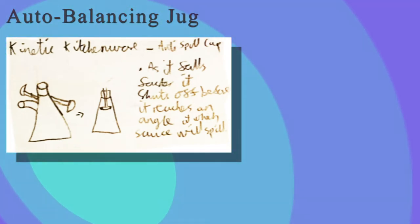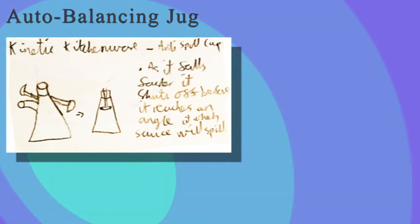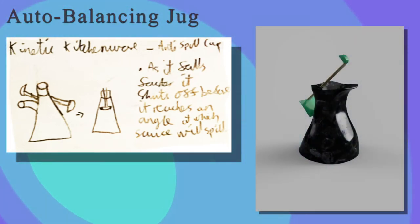My first idea was an auto-balancing jug, a simple kinetic kitchenware concept where, as it falls, some mechanism would close off the jug so nothing could spill — maybe as a soy sauce container. I didn't really like this idea as it wouldn't hold up against many products that already exist, but nonetheless I made a Fusion 360 model, which you can see here.